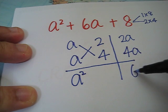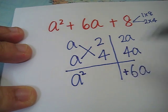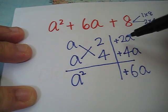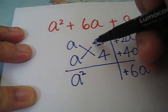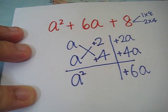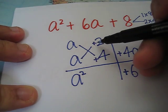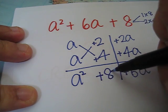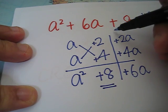To get 6a, which is positive, it means these two terms are positive. If this is positive, it means this is positive. If here is positive, it also means it's positive. Let's check. Positive 2 times positive 4 will give us positive 8, which is the same as this.